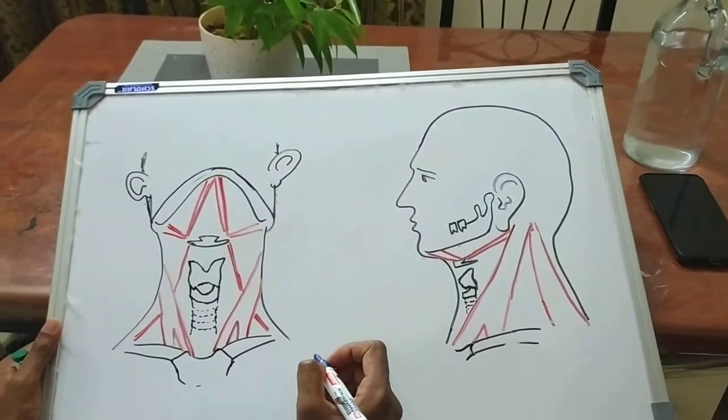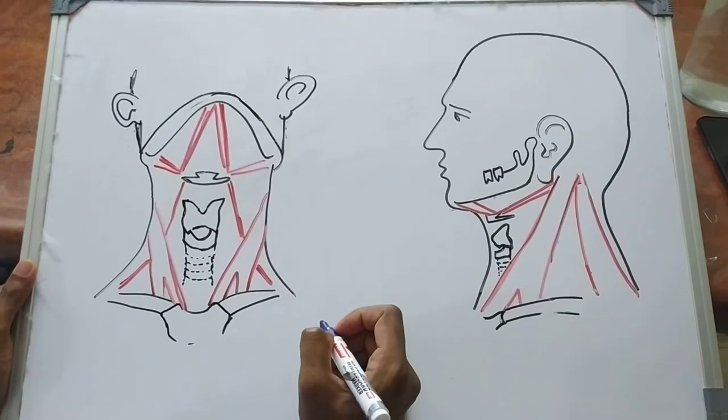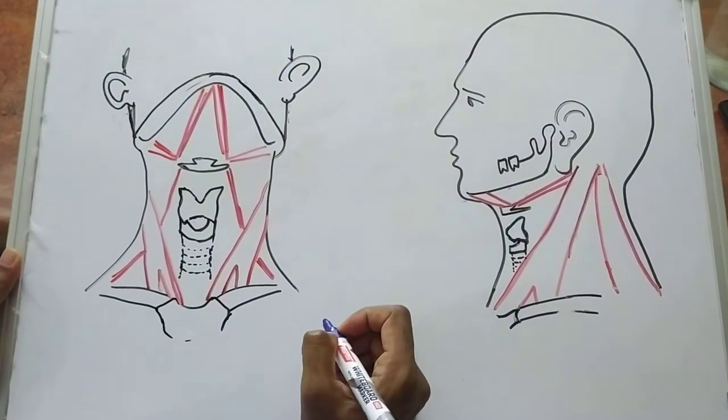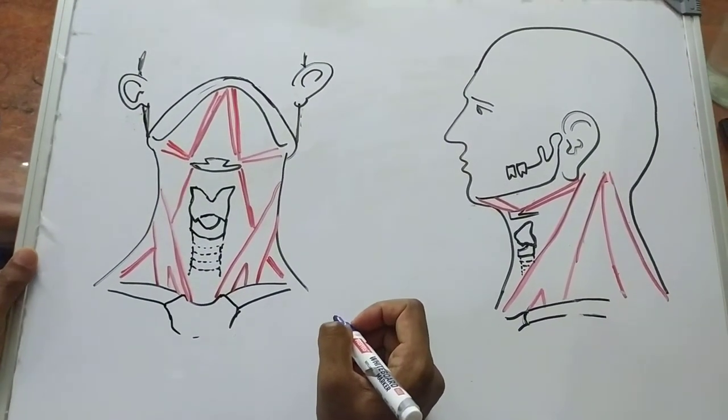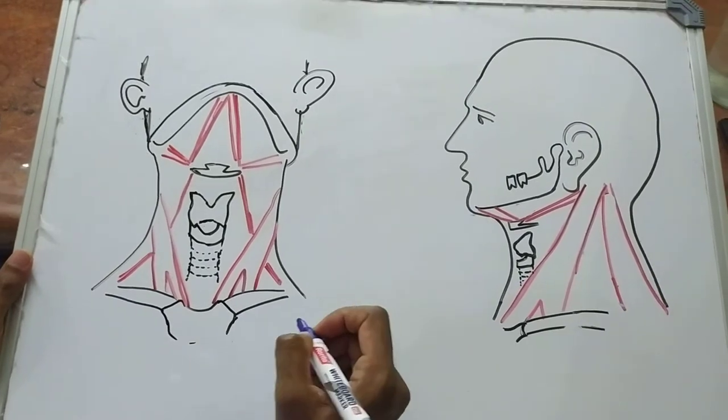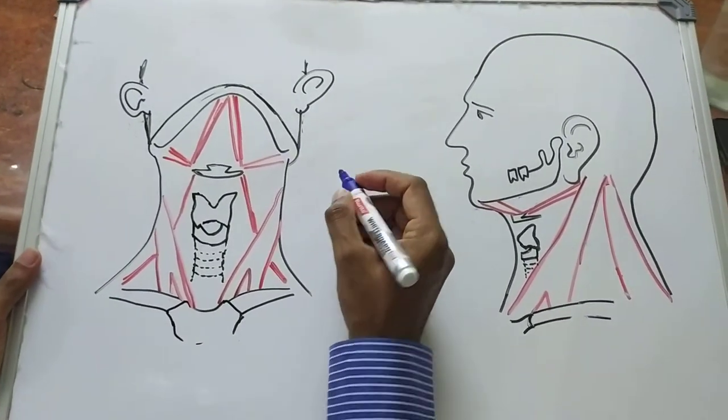Hello everyone. Today we will be discussing levels of neck nodes. So total there are 6 levels of nodes in the neck and the 7th one in the mediastinum.